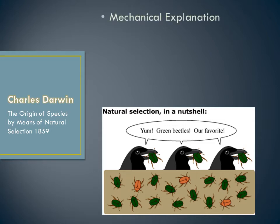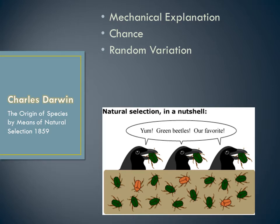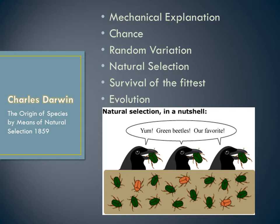This can, in part, be attributed to chance through a process known as random variation. However, in addition to this, it can be attributed to a process called natural selection. Other scholars have coined the phrase 'survival of the fittest' to characterise this process. This is known as the process of evolution.